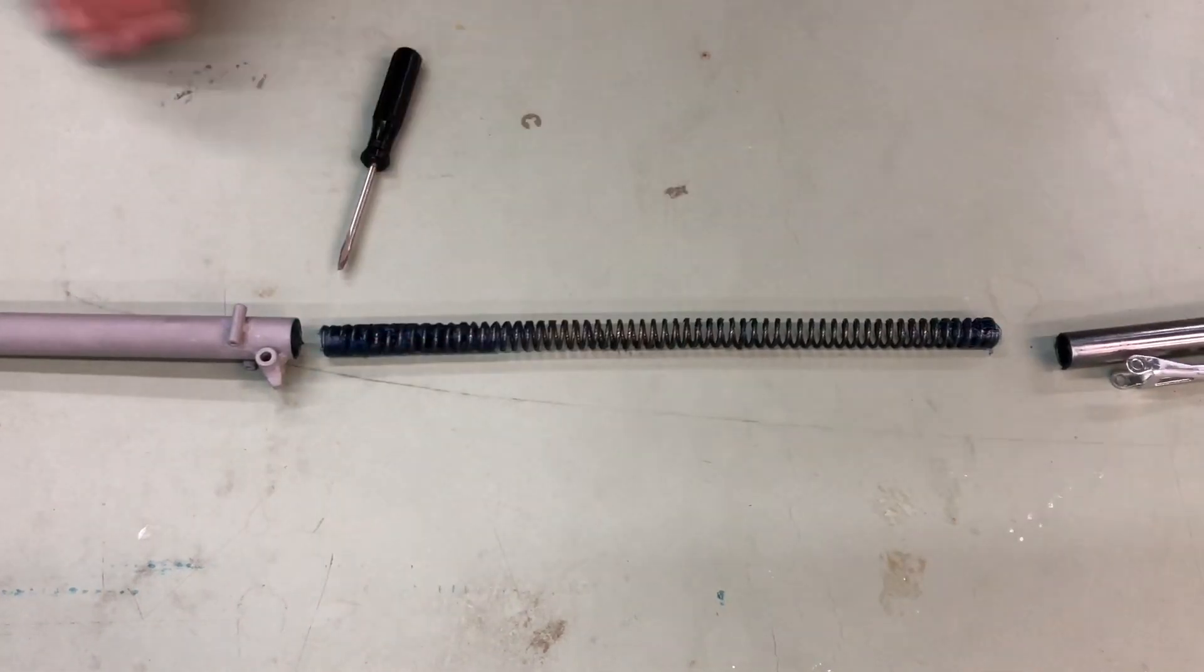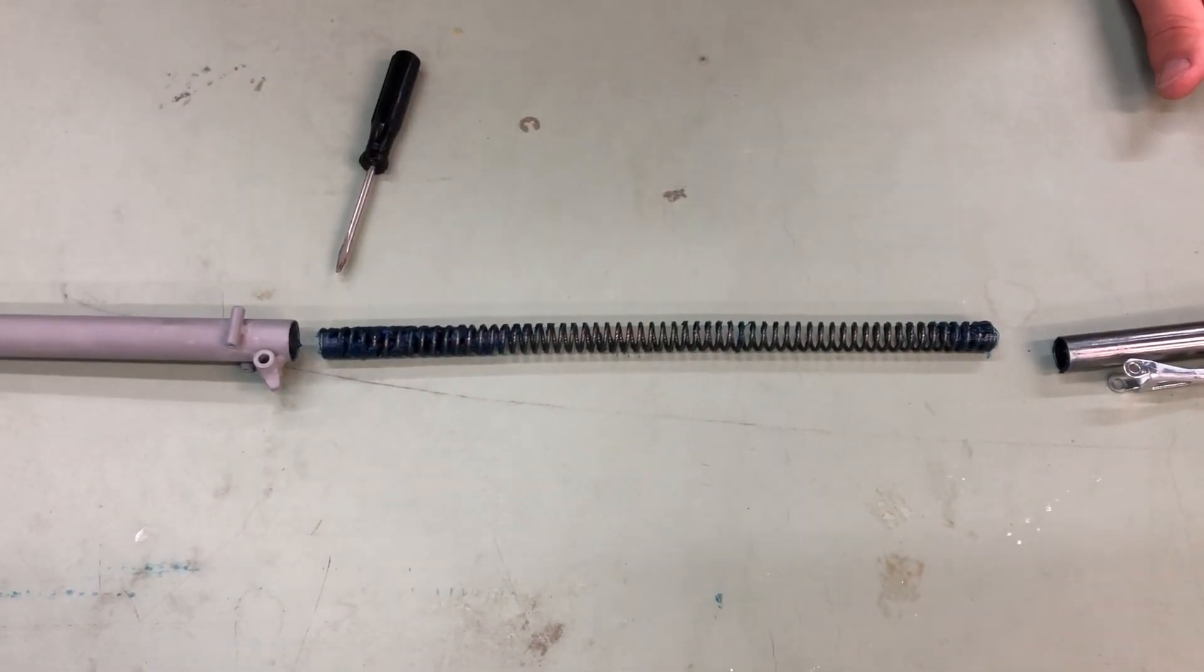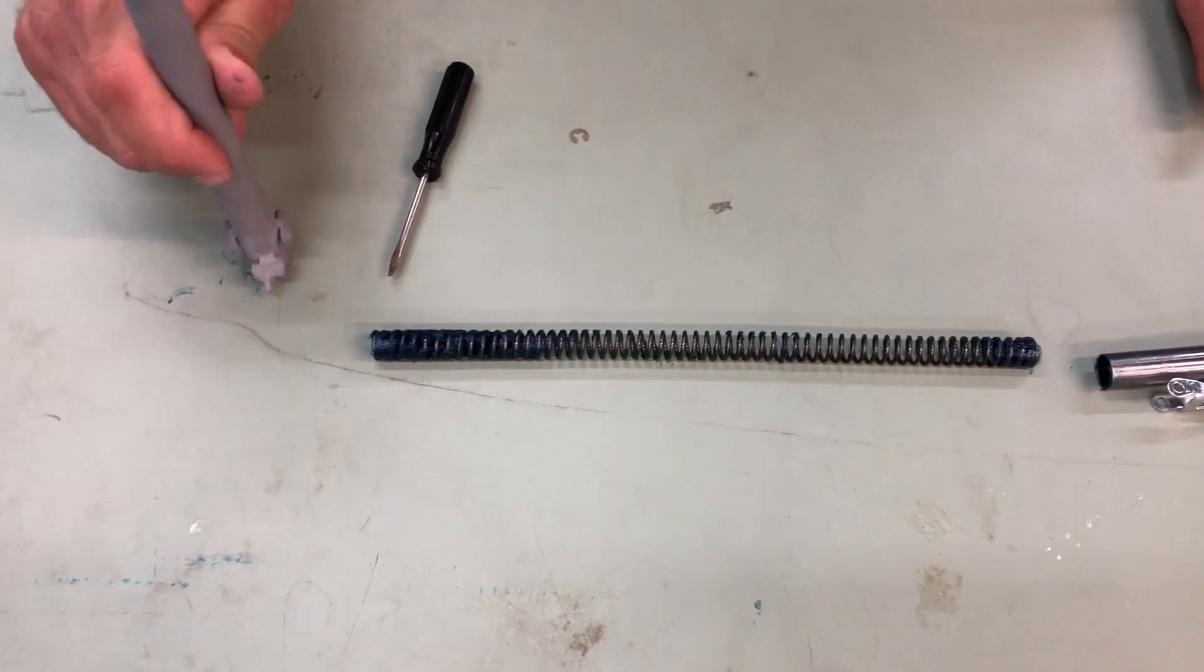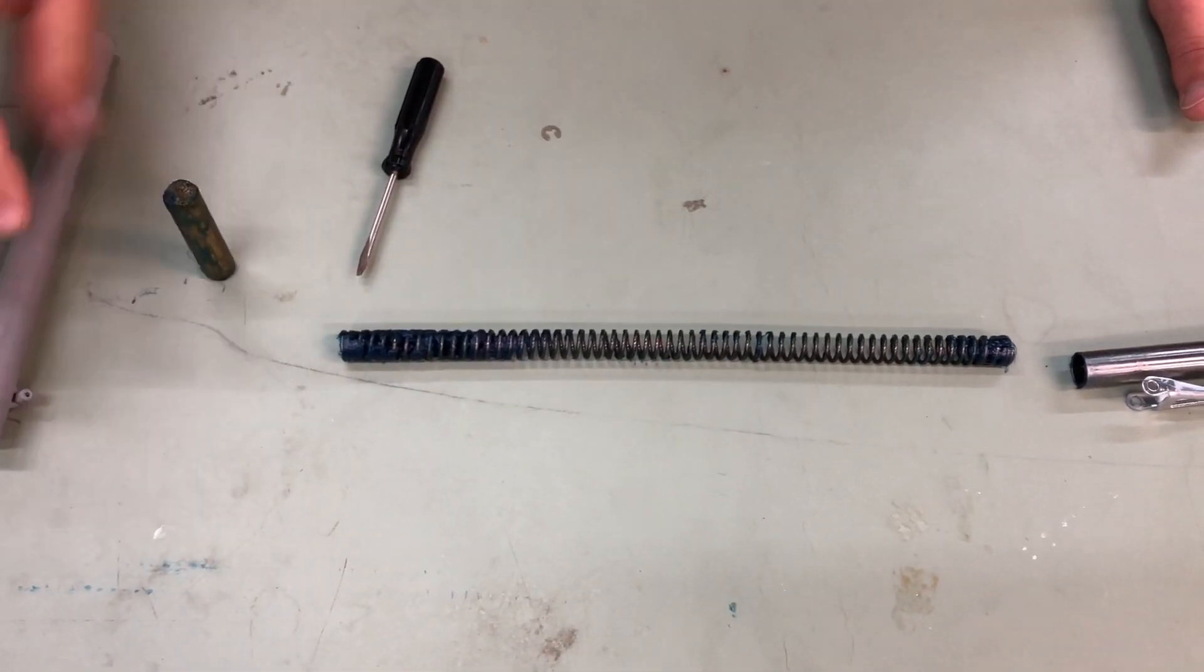So as you take this apart, there is your spring. The lubrication in here is blue grease and then as a spacer we do have a dowel rod.